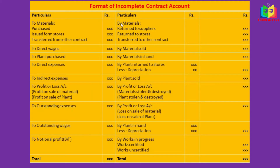In the credit side we have materials here too — material return to suppliers, return to stores, and transfer to other contracts. Next, material sold and material in hand. This 'in hand' is nothing but material at the end — the leftover material after the contract will appear here.